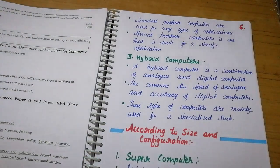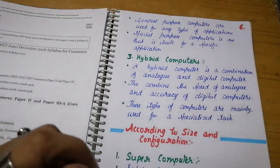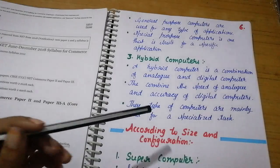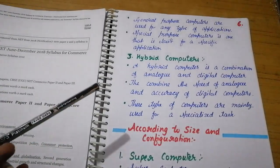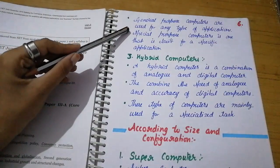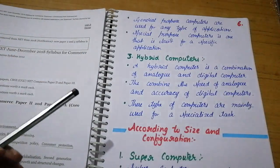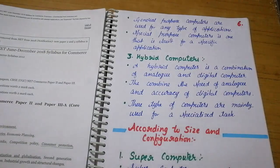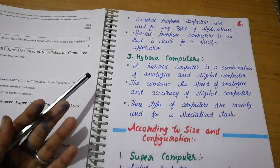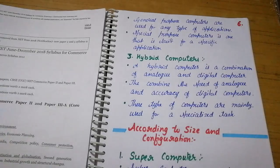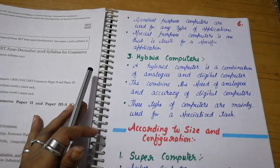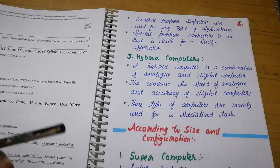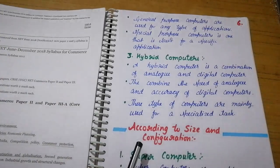General purpose computers are used for any type of applications. As the name suggests, they are for general purposes. But specific purpose computers are created for a special purpose, for specific tasks. Now let's move to hybrid computers.